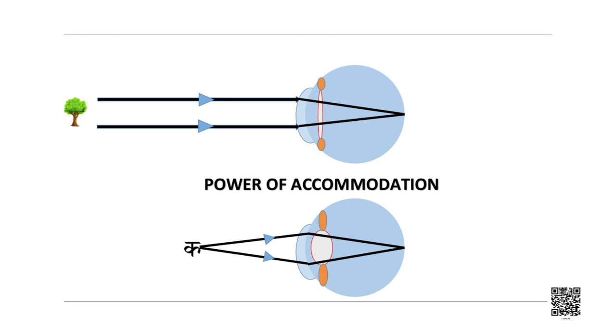When you are trying to read a book, the ciliary muscles get tensed. This increases the curvature of the eye lens and the eye lens becomes thicker. Consequently, the focal length of the eye lens decreases, which enables us to see nearby objects clearly. This ability of the eye lens to adjust its focal length is called accommodation.